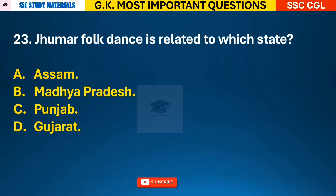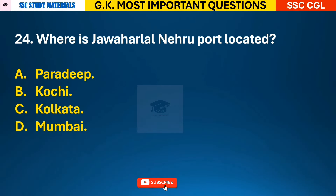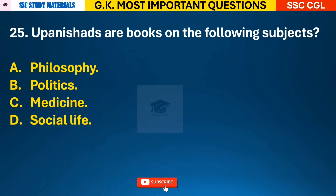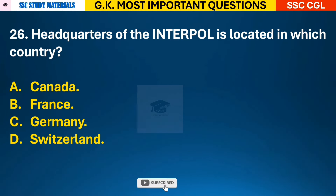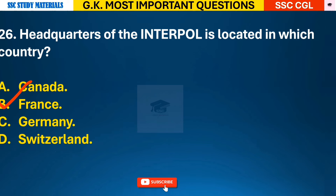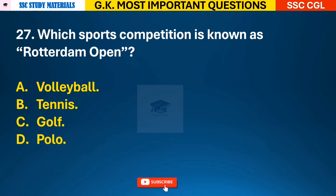Question 23: Jhumar folk dance is related to which state? Answer A - it is related to Assam. Question 24: Where is Jawaharlal Nehru Port located? Answer D - the port is located in Mumbai. Question 25: Upanishads are books on which subject? Answer A - Upanishads are books on philosophy. Question 26: Headquarters of Interpol is located in which country? Answer B - it is located in France.